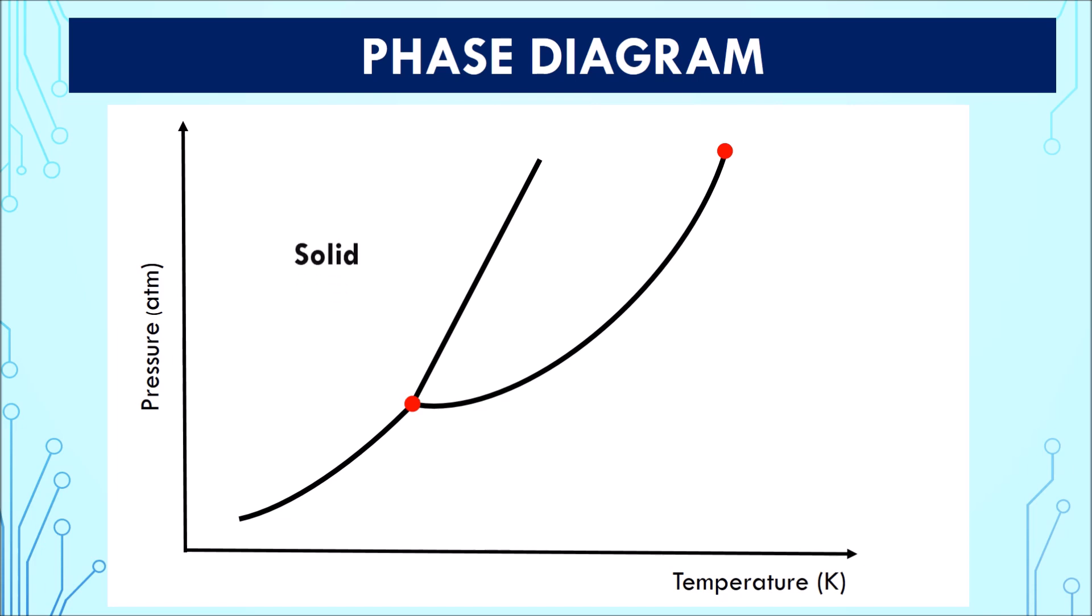First, regions between the lines that correspond to stable phases like solid, liquid and vapour. Next, the lines that correspond to temperature and pressure under which two phases are in equilibrium. For example, solid and liquid boundary, solid and vapour boundary, and finally liquid and vapour boundary.